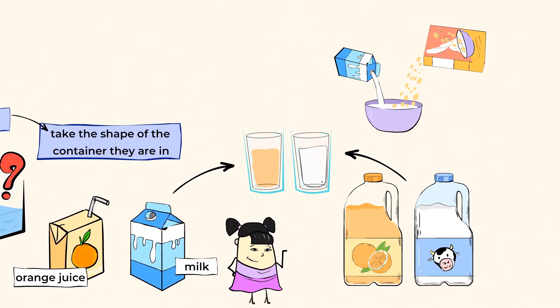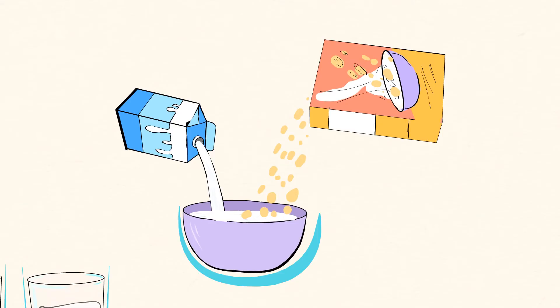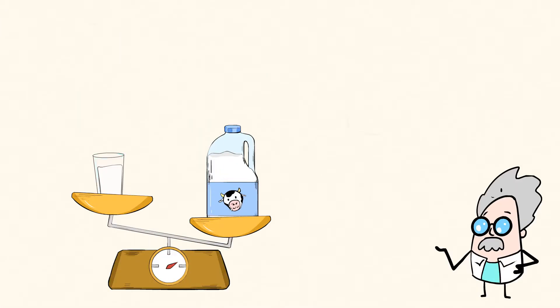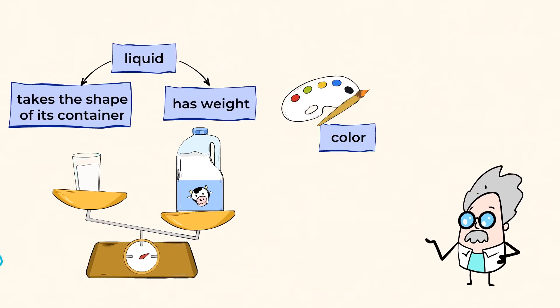Or if you put milk in a bowl to make your cornflakes in the morning, the milk will take the round shape of the bowl. At least a glass or a cup of milk isn't heavy as a whole gallon of milk. So yeah, liquids not only take up space, but also have weight.